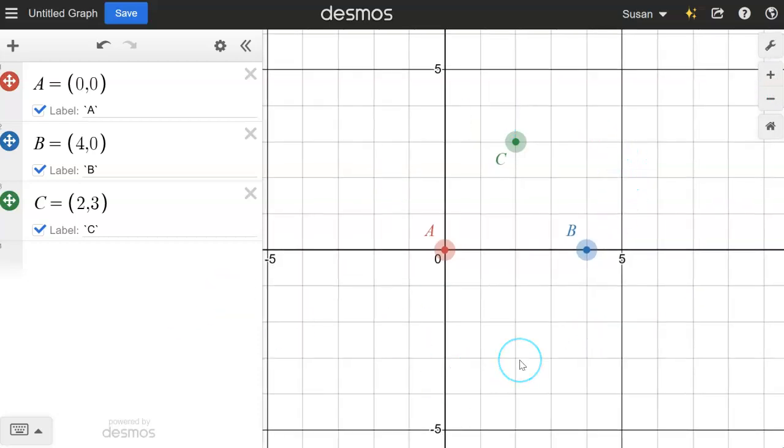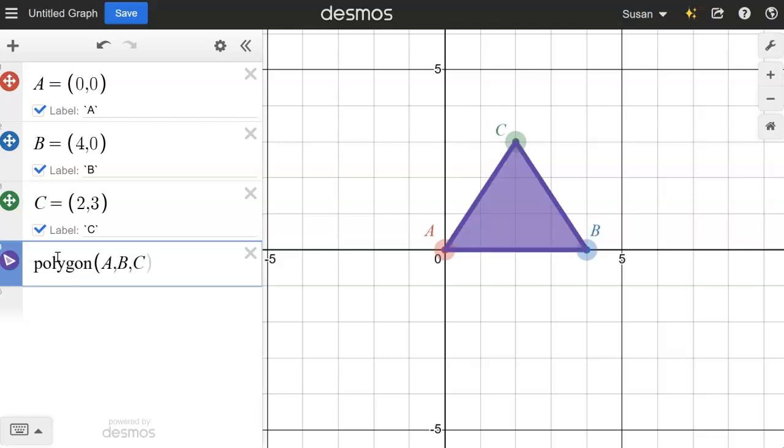Now what I would like to do is create a polygon or a triangle that connects A, B, and C. So we're going to type the word polygon. Now be sure you do not capitalize this. You want to type P-O-L-Y-G-O-N, and notice how it changed. And then in parentheses, we're going to put A, B, C. And look what happens. It has connected those three points to create a triangle.